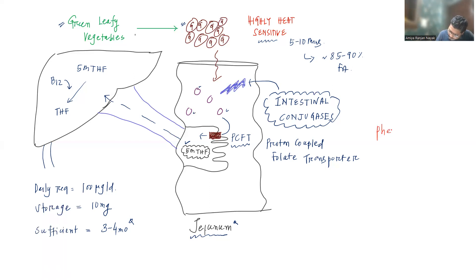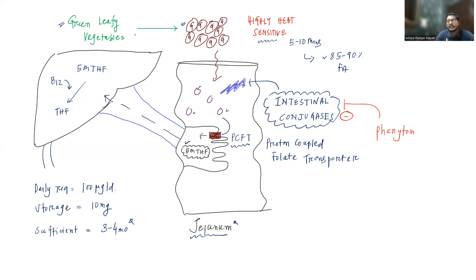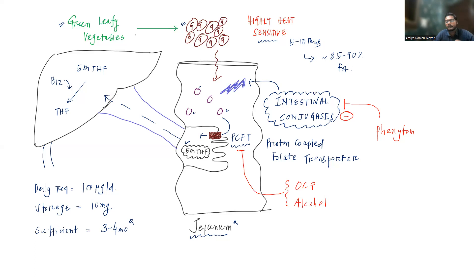There is an anti-epileptic drug, phenytoin, which can inhibit intestinal conjugases, causing folic acid deficiency. Phenytoin can also cause aplastic anemia (idiosyncratic type) and pure red cell aplasia. Additionally, OCPs and alcohol can inhibit the proton-coupled folate transporter (PCFT), thereby inhibiting epithelial cell absorption of folic acid, so they can also cause folic acid deficiency.